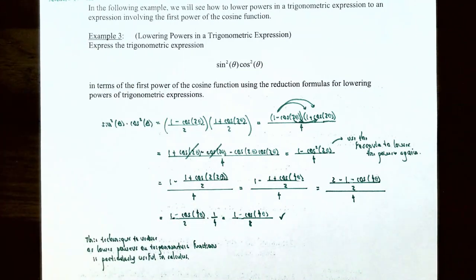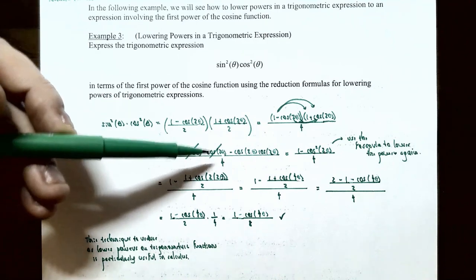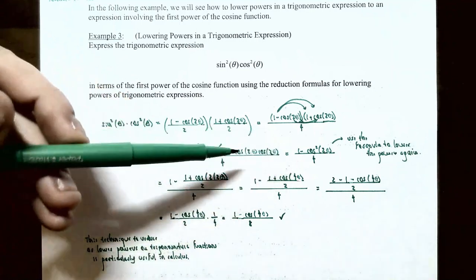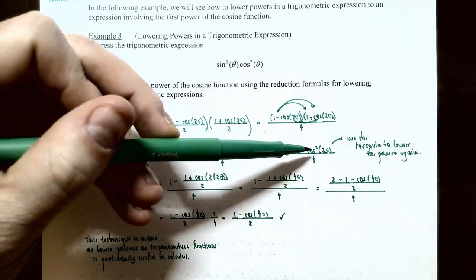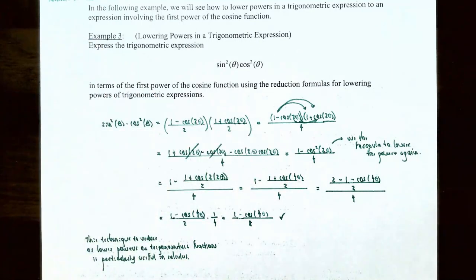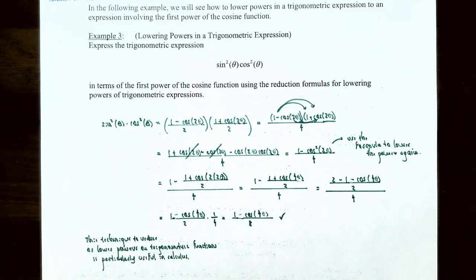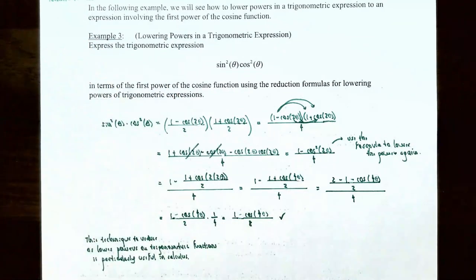The middle two terms cancel because they are opposites: cos(2θ) − cos(2θ) = 0. So we're left with 1 − cos²(2θ) all divided by 4. Notice we've simplified as far as possible, except now we have cos²(2θ) — the power on the cosine function is still 2.